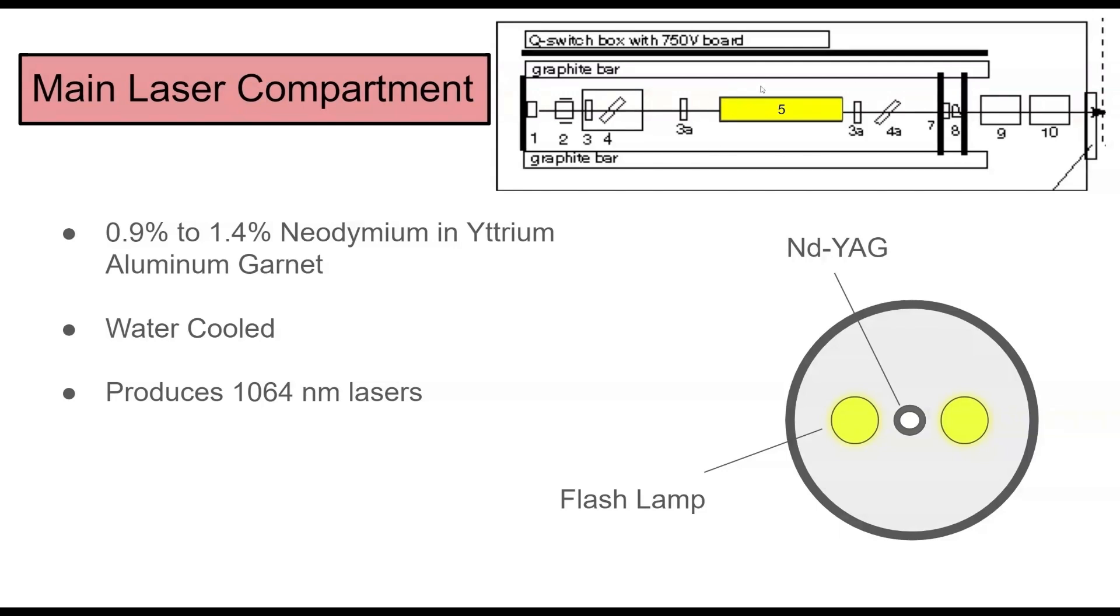Right here, this is the main laser compartment. This is where the optical pumping and population inversion happens. This is where the ND-YAG actually is and where the laser gets produced. Here's a cross-face section of this compartment. As you can see in ours, we have two flash lamps, and then we have an ND-YAG, and then we have this hole in the middle for the actual laser to get there.